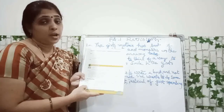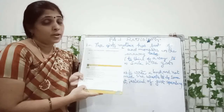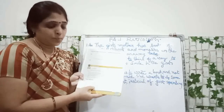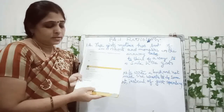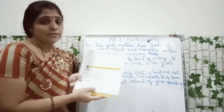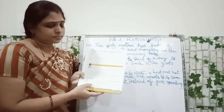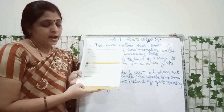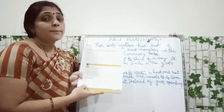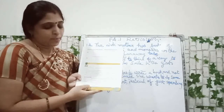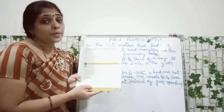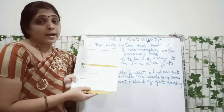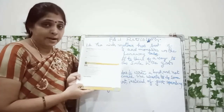Next: Far away. F-A-R-A-W-A-Y. Far away means a place that is far off. Next: Idea pot. I-D-E-A P-O-T. Idea pot means a person's mind. A person's mind is their idea pot.